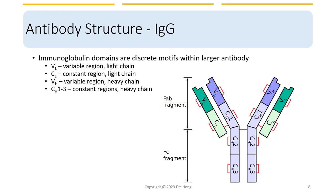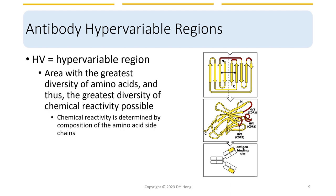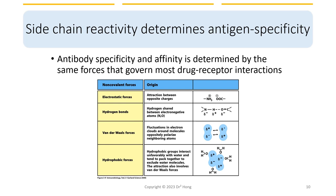Now let's take a look at the antibody structure from the chain standpoint. Both the light chain and the heavy chain contain variable and constant regions. The variable regions from both the light chain and heavy chain participate in antigen binding. We also have another name for the antigen-binding region: hypervariable regions, because it is the area with the greatest diversity of amino acids and chemical reactivity. The reactivity is determined by different amino acid side chains associated with the hypervariable region, which in turn determine the different non-covalent forces between the binding region and the antigen — including electrostatic forces, hydrogen bonds, van der Waals forces, and hydrophobic forces.